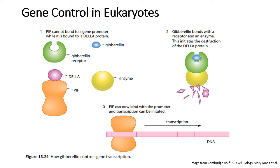When we learned about coordination in plants, we spoke about how gibberellins can allow the growth of plants and the germination of seeds. Gibberellin also controls the transcription of certain genes within a plant. Typically in seed germination, gibberellin is secreted when a seed takes up water from soil. Gibberellins then stimulate the production of amylase, which allows the seeds to break down stored starch molecules, giving the seed energy to germinate and grow.